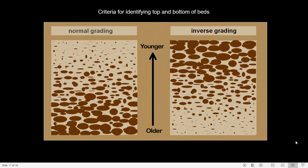The first criteria is normal grading or graded bedding. These are sedimentary deposits which may be due to alluvial or wind deposition. In the case of normal graded bedding, the sediment decreases in grain size from bottom to top. The bottom sediment has the larger grain size, and as we move to the top, the sediment size gradually decreases. So if you get a bed showing this type of normal grading, you can definitively identify which part is on top and which is on the bottom.